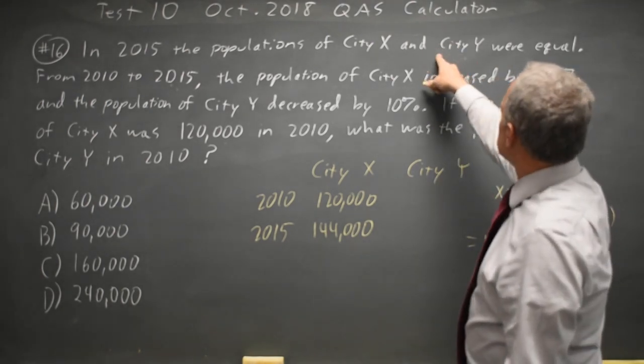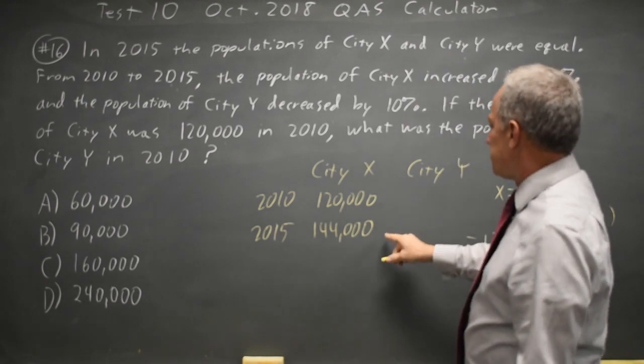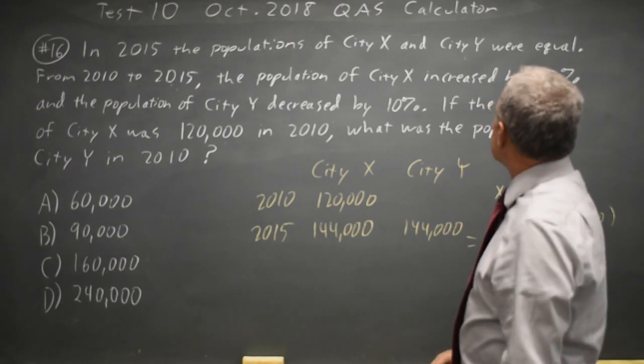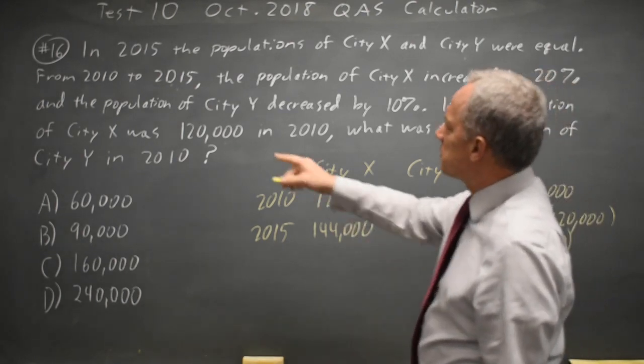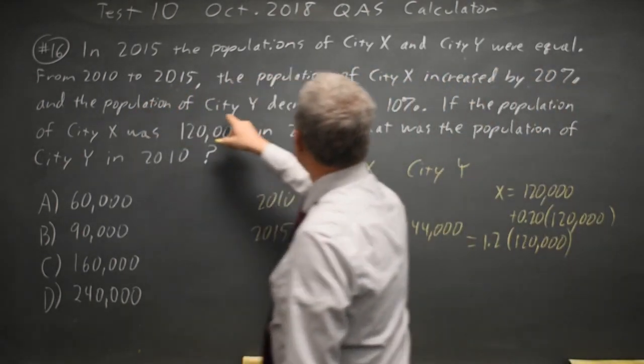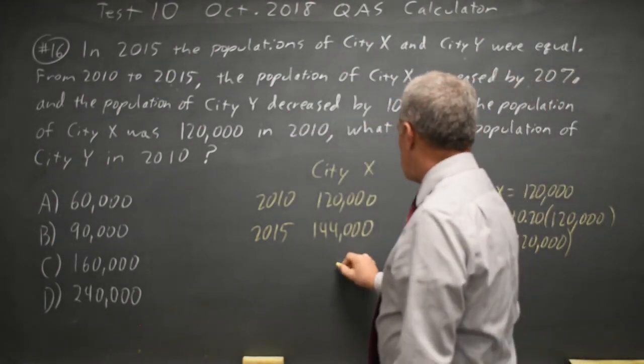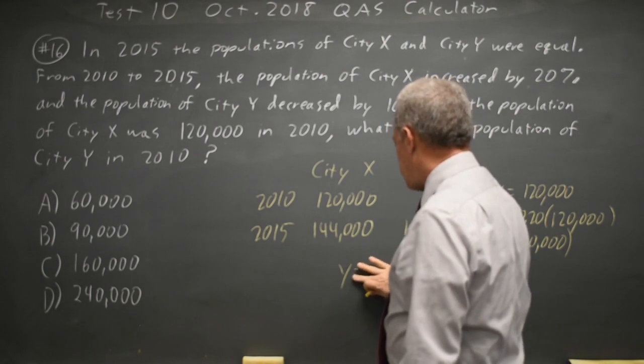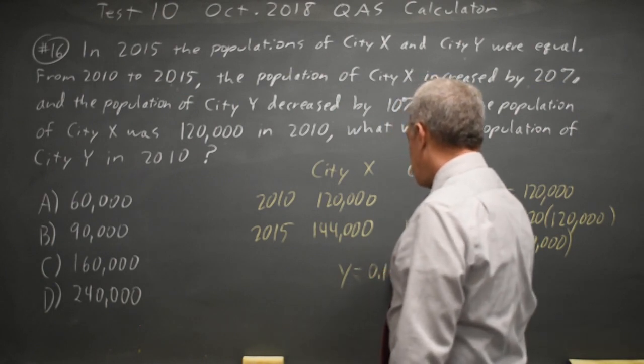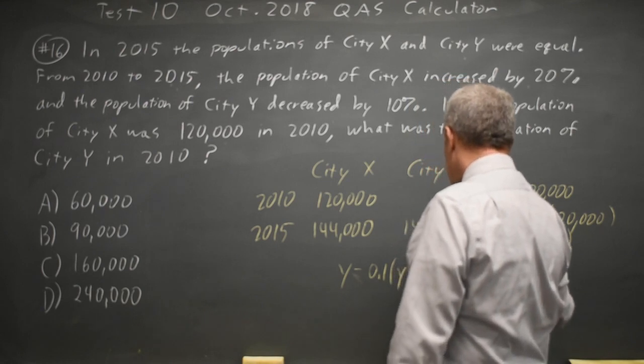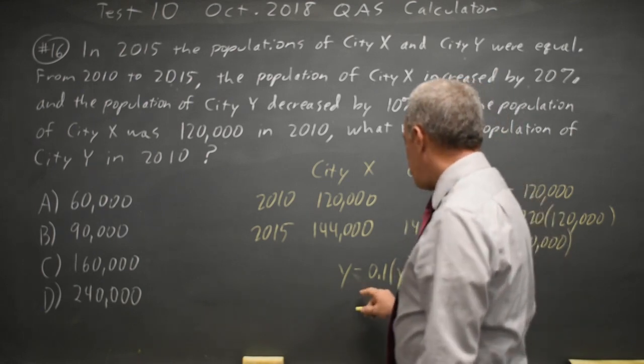City X and City Y are equal in 2015, so City Y here is 144,000. From 2010 to 2015, City Y decreases by 10%. So Y minus 0.1Y equals 144,000, so that's 1 minus 0.1, which is 0.9Y equals 144,000.